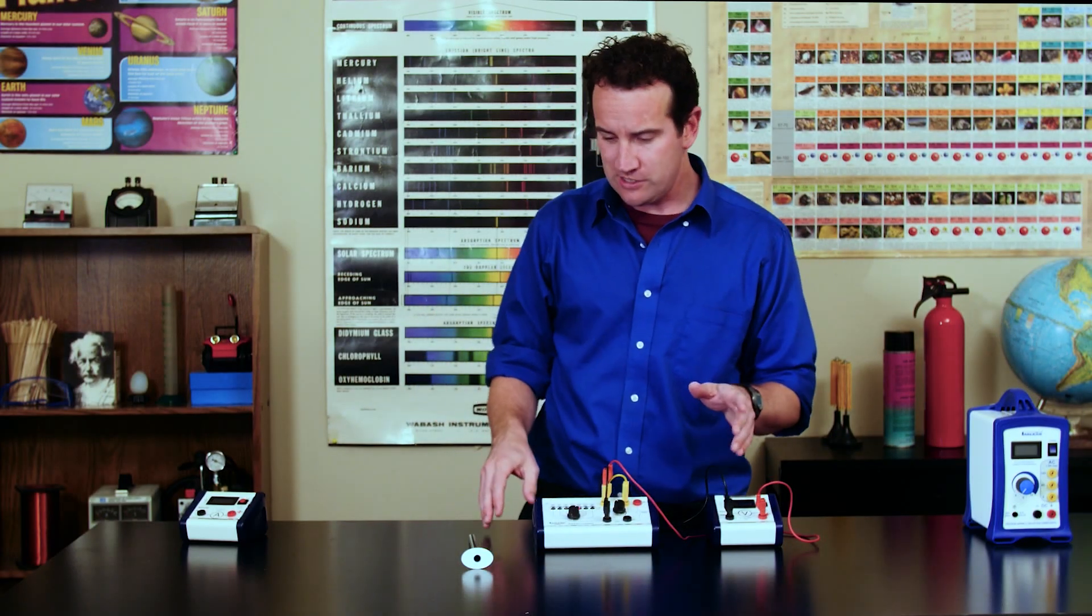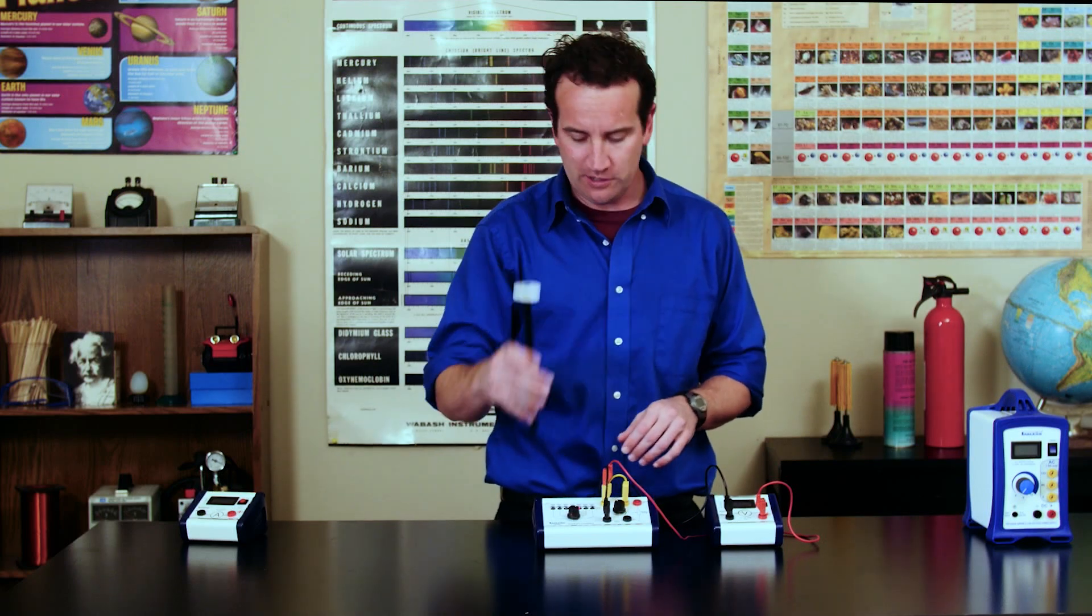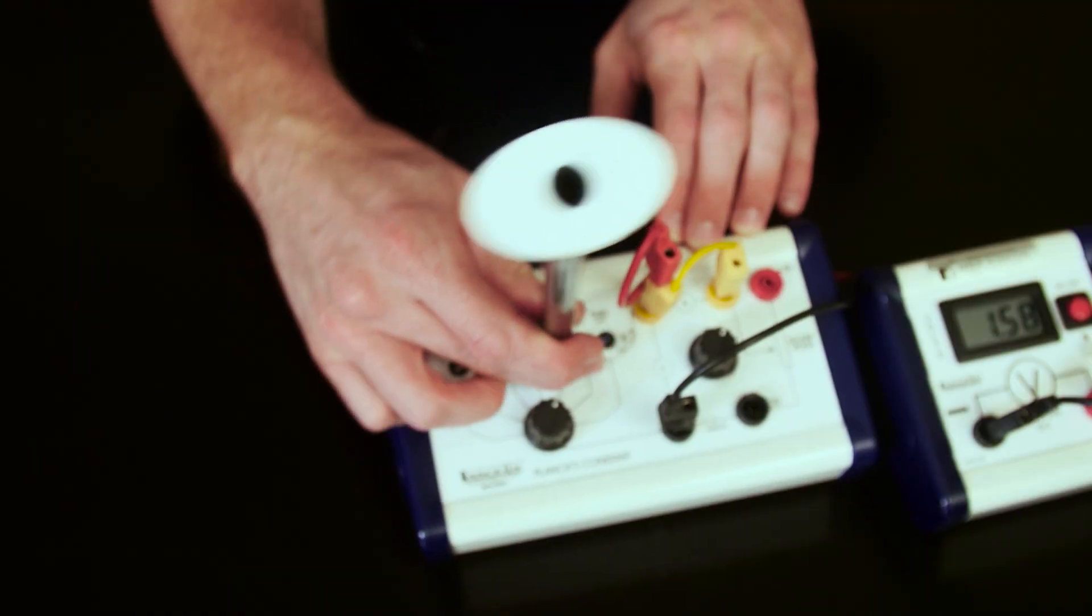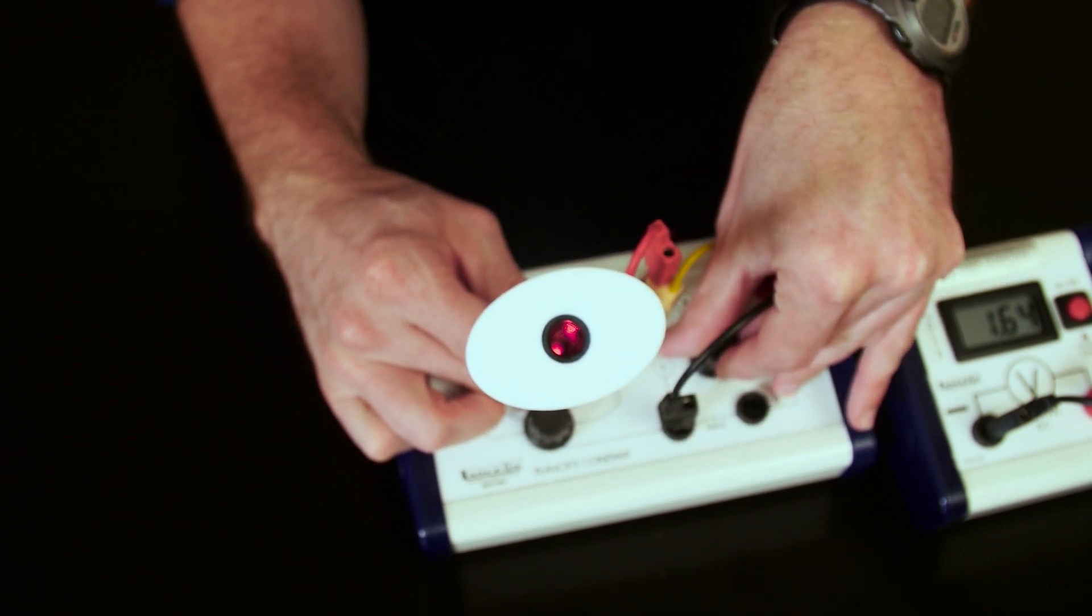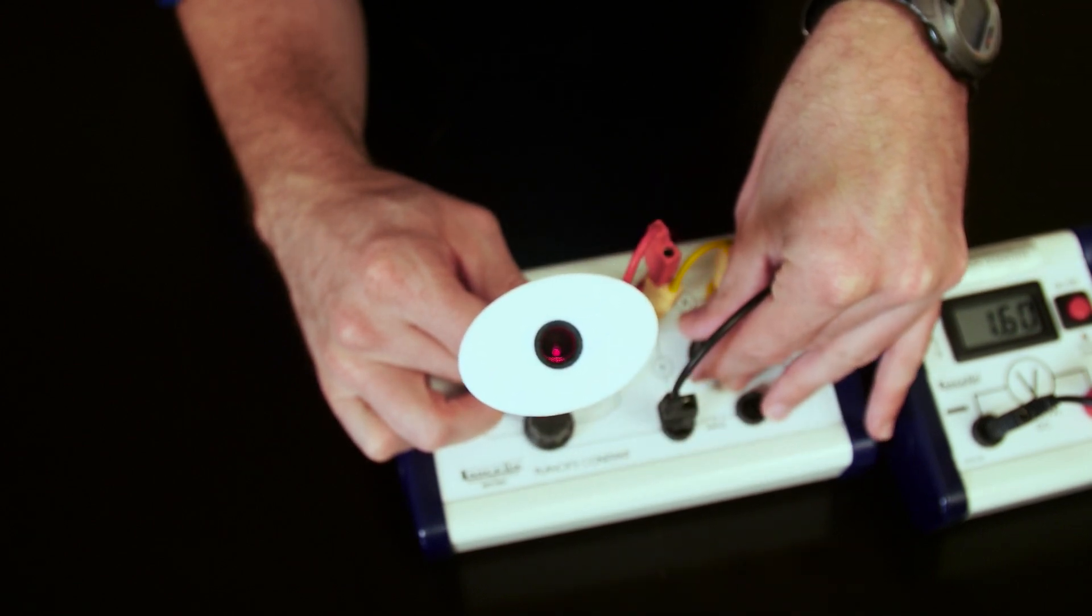If this is difficult to see, there's an eye-spot inclusion which allows you to look in the dark that can help you find exactly what voltage it is that the diode is turning on.